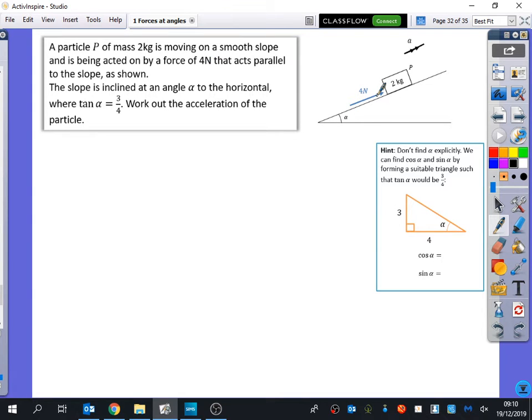If it said the 4 newtons was acting horizontal, the arrow would be like that and the angle would be equal because of alternate angles. Obviously they're not saying that though, they're just saying it is parallel.